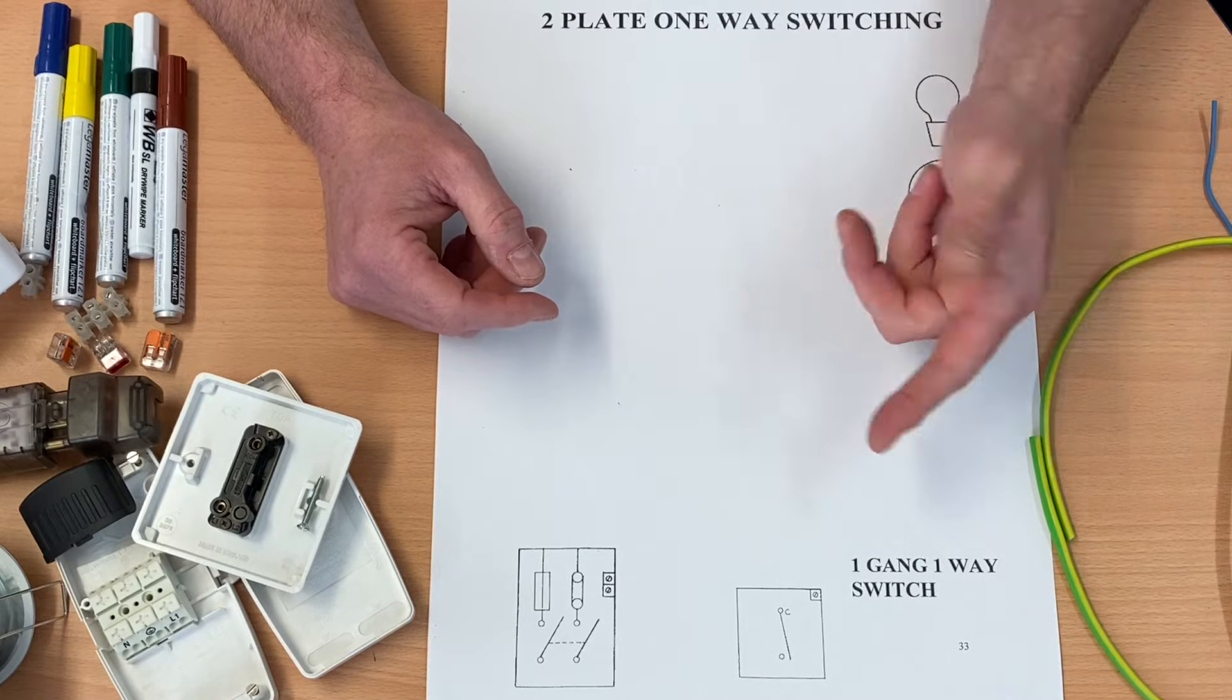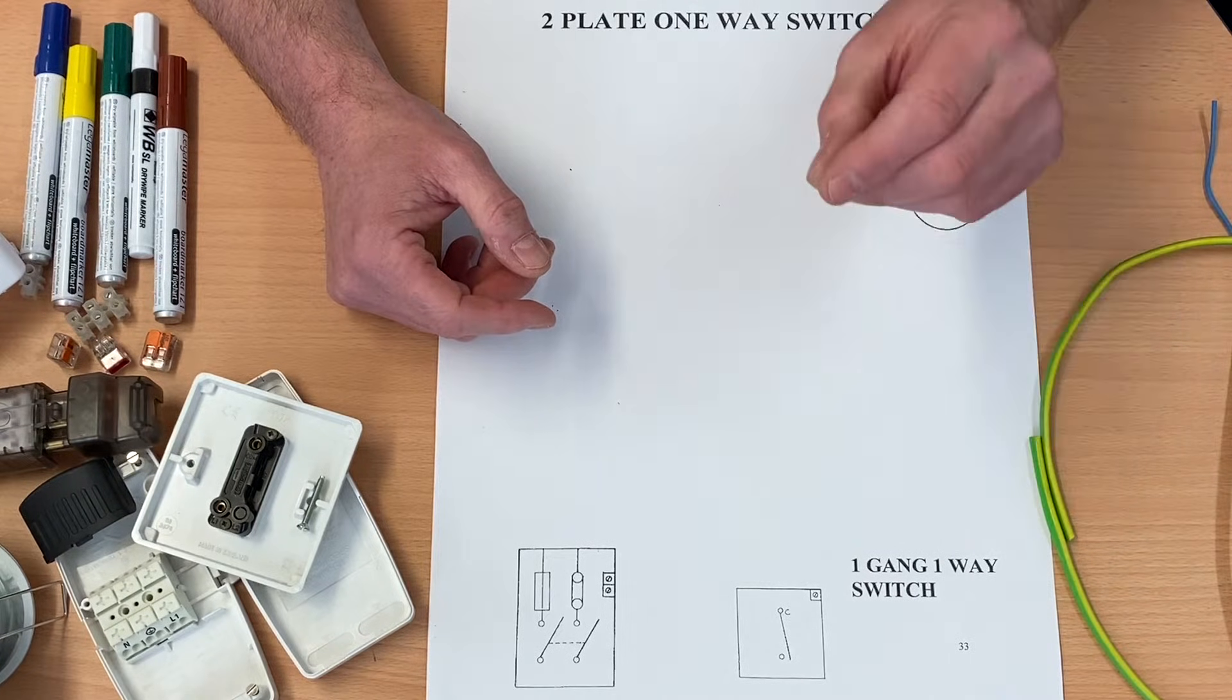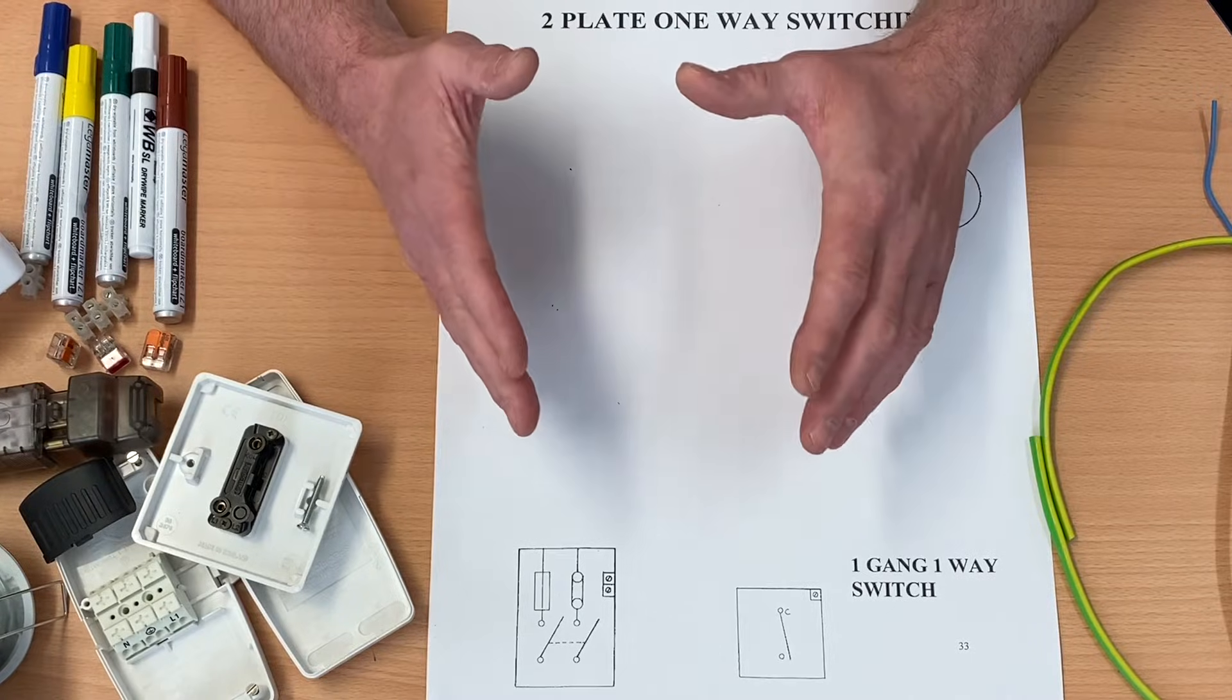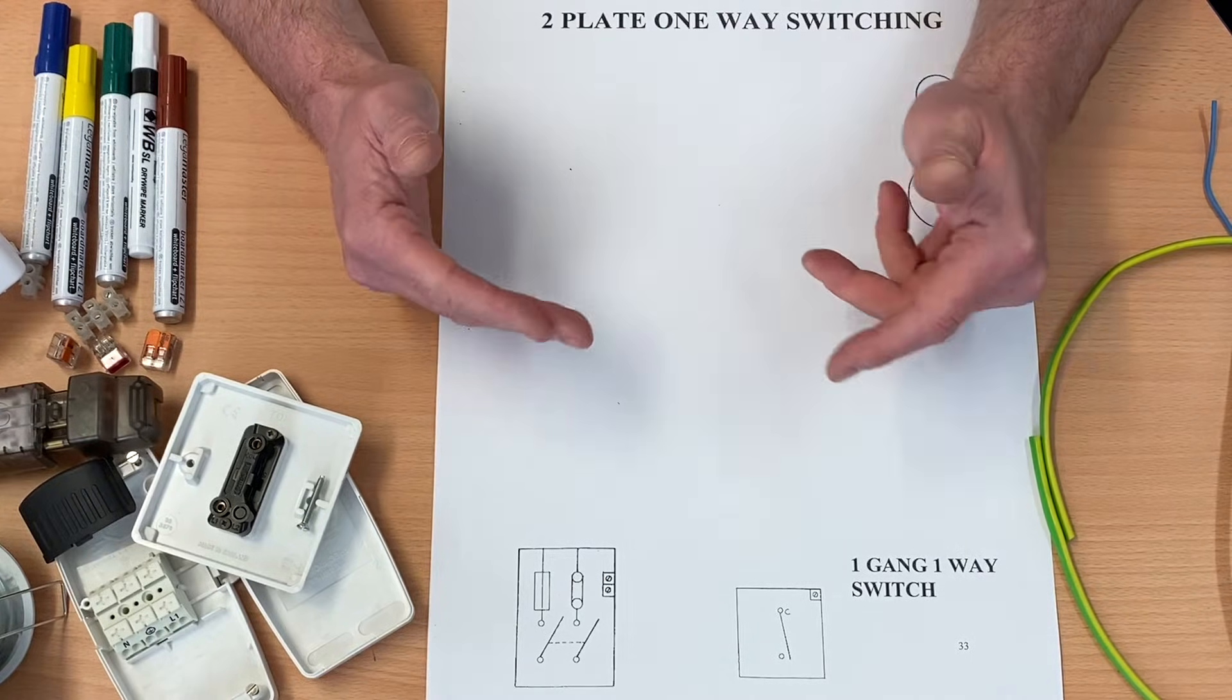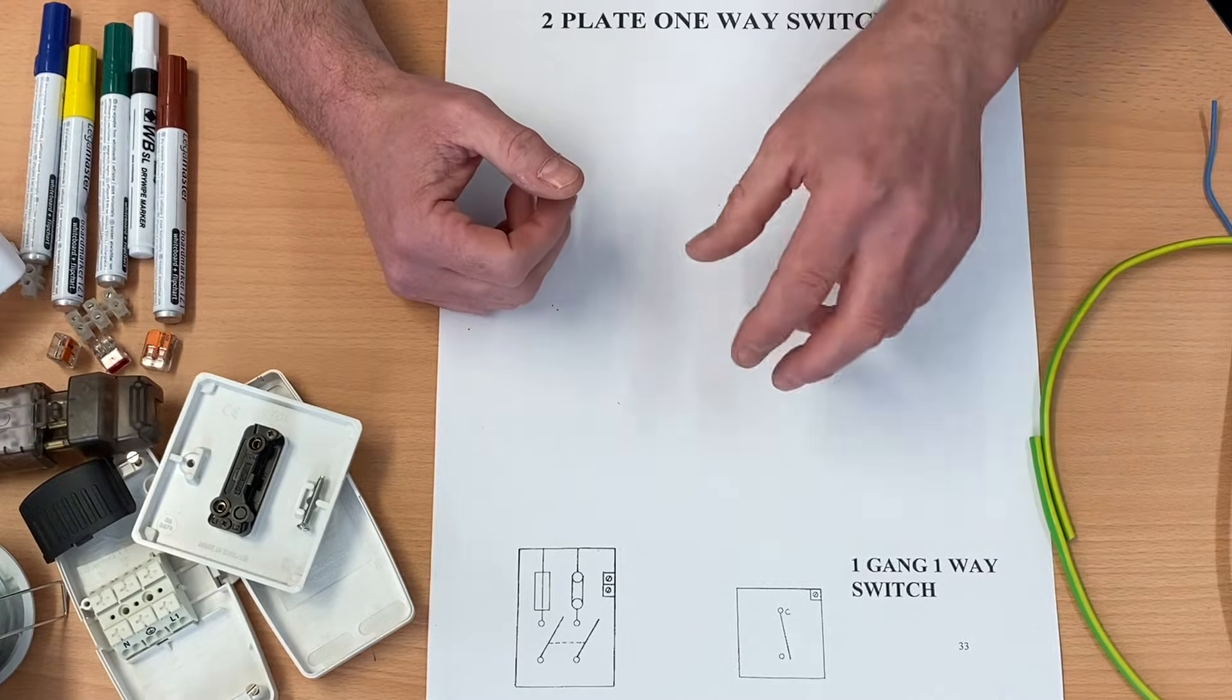Sometimes this is called taking the feed or supply to the switch, but in AM2 and AM2S, I've heard students come out and say, I was asked to wire the lighting circuit using the two plate method.